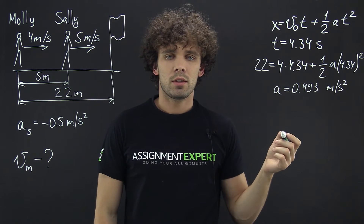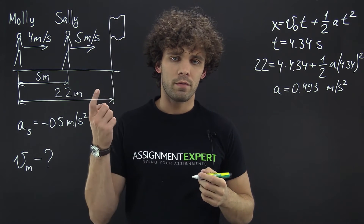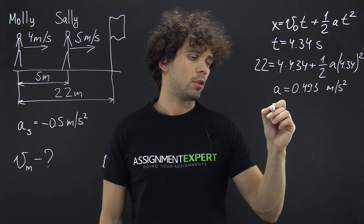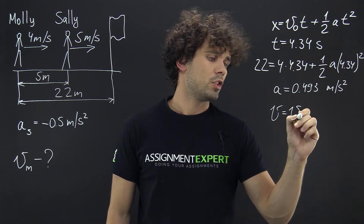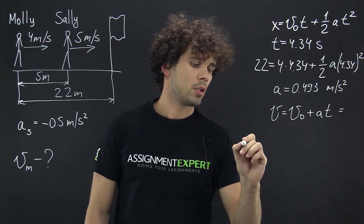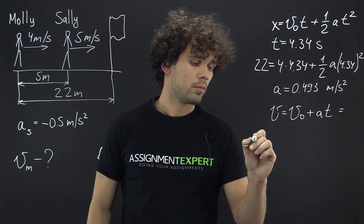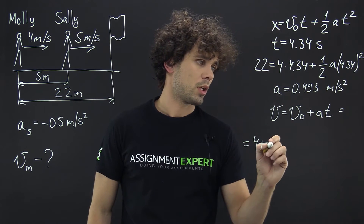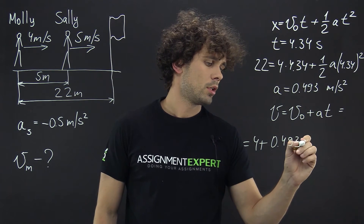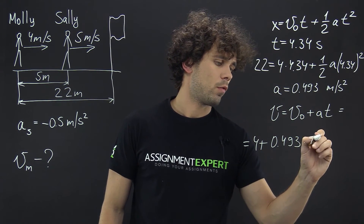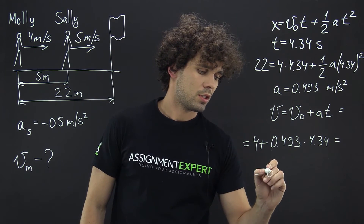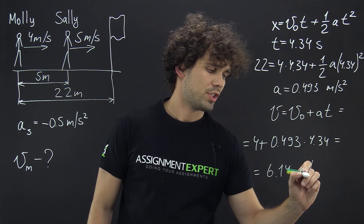Now that we know Molly's acceleration, we can find her speed at the finish line using the kinematic equation V = V₀ + A·T. In our case: V = 4 + 0.493 × 4.34, which gives us 6.14 meters per second.